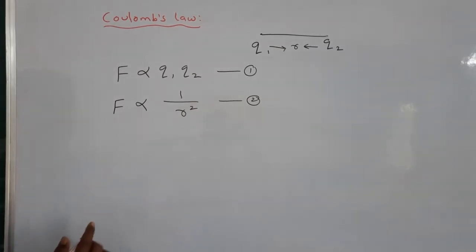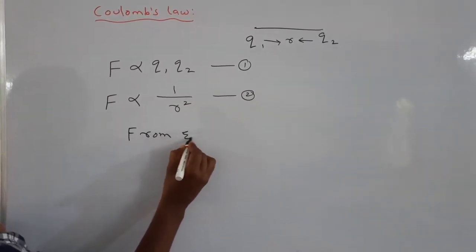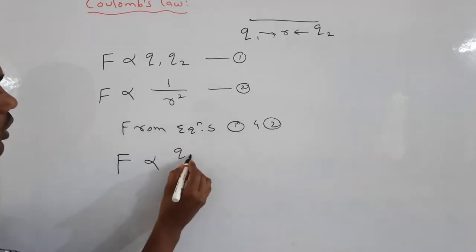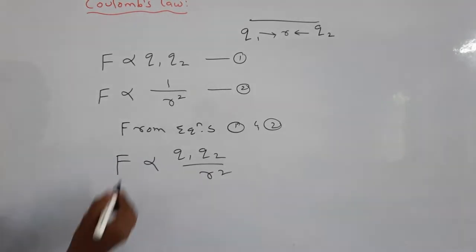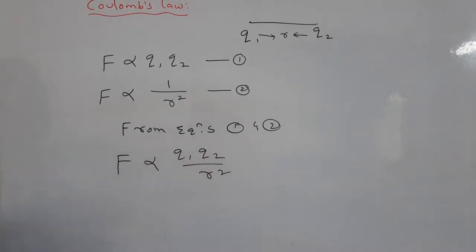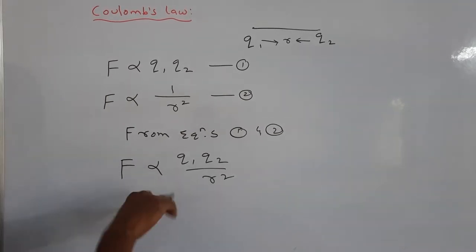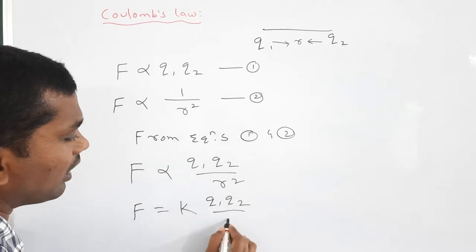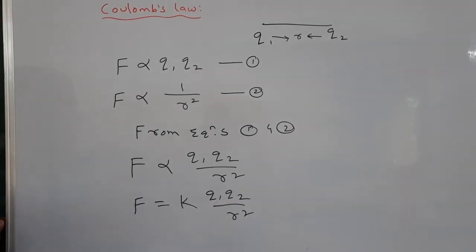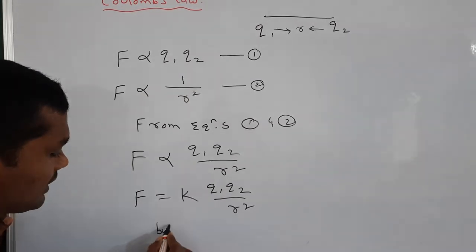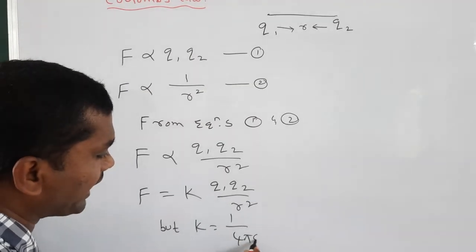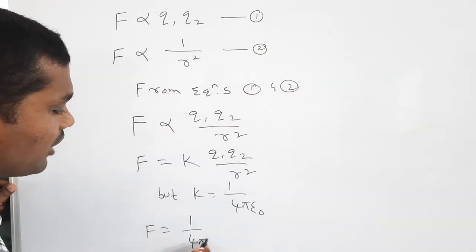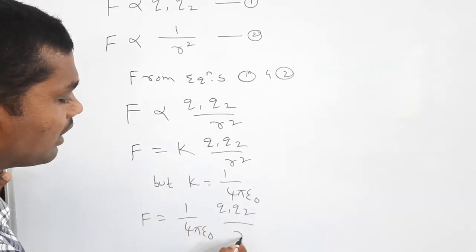From equations 1 and 2, we can write F is proportional to q1 times q2 divided by r squared. We can eliminate the proportionality by introducing a constant K. So F is equal to K times q1 times q2 divided by r squared. Here K is the proportionality constant, and K is equal to 1 divided by 4 pi epsilon naught. Substituting this value, we get F equals 1 over 4 pi epsilon naught times q1 q2 divided by r squared.